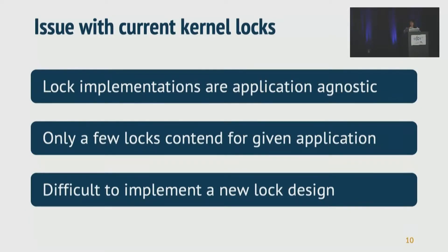Here are the problems with current kernel locks. First of all, current lock implementations are application agnostic. Also, only a few locks contend for a given application. Which means, even if you decide to modify a spin lock in the kernel, you don't actually need to change every spin lock in the kernel. Finally, it is difficult to implement a new lock design that requires careful use of atomic instructions.